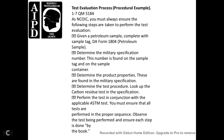QM 5184 — The NCOIC must ensure the following steps are taken before testing: review the petroleum sample tag DA Form 1804; determine the military specification number from the sample tag or container; determine the product properties found in the military specification; look up the required tests in the specification; perform the test in conjunction with the applicable ASTM standard; ensure all tests are performed in the proper sequence; and ensure that each step is done by the book.